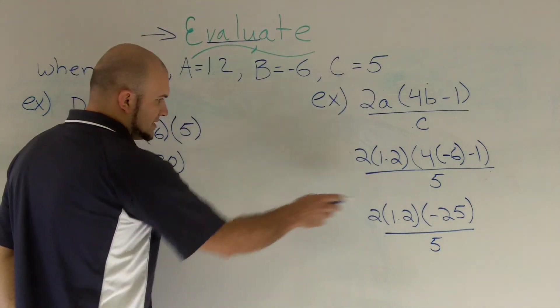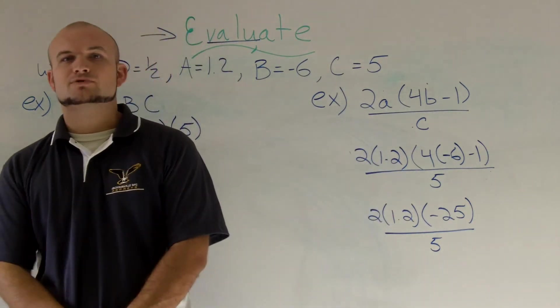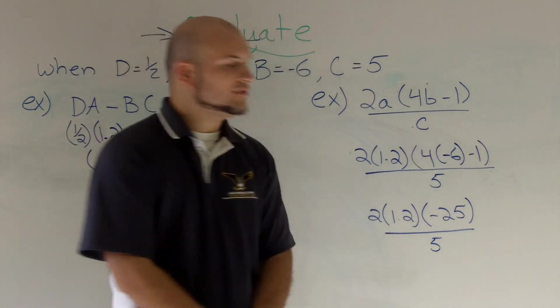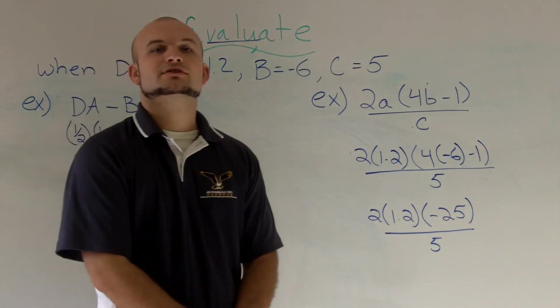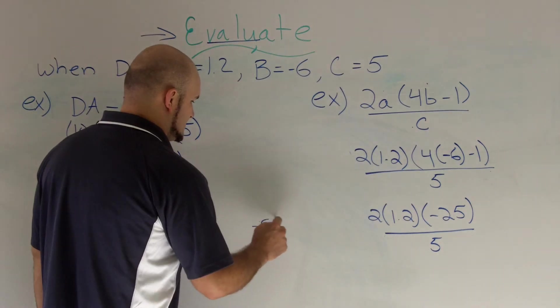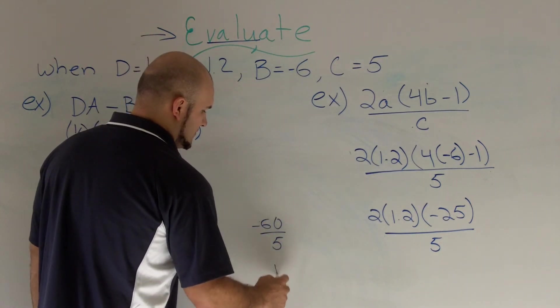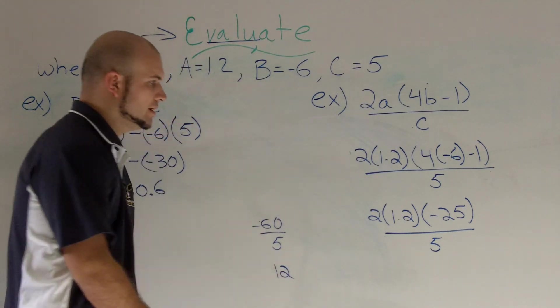The most common way is just to multiply across. 2 times 1.2 is going to be 2.4 and then 2.4 times 25 is going to be negative 60. So you have a negative, negative 60 divided by 5 and that's going to equal a 12.